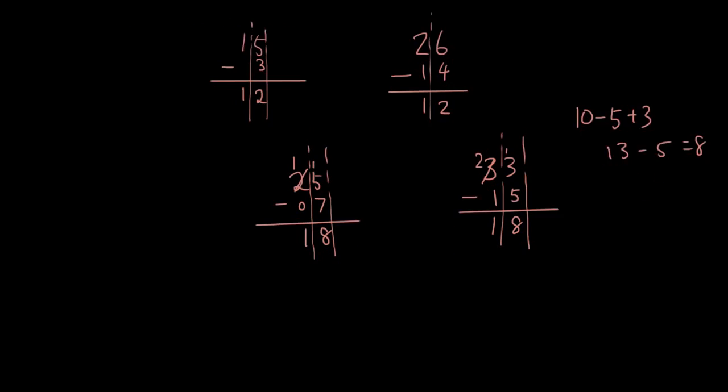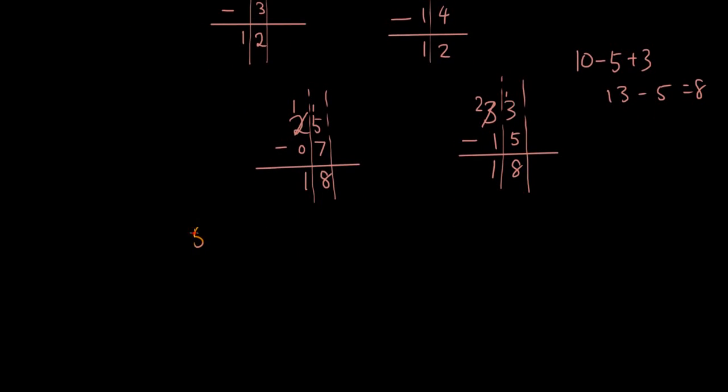Let's do another one, 56 minus 28. 6 minus 8, 6 is not big enough. Let's borrow 1 from the next digit. So it's now 16 minus 8. It's 10 minus 8, which is 2, plus 6, which is 8. And 4 minus 2 is 2.